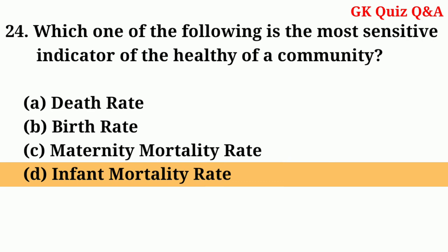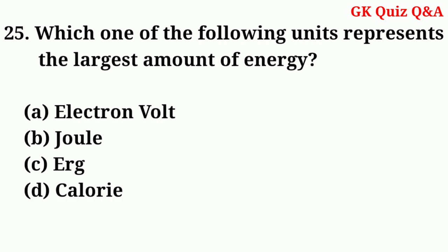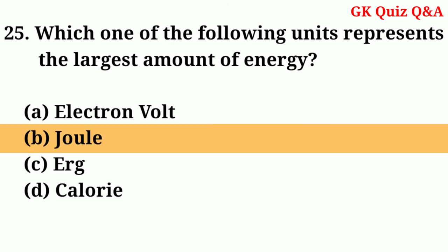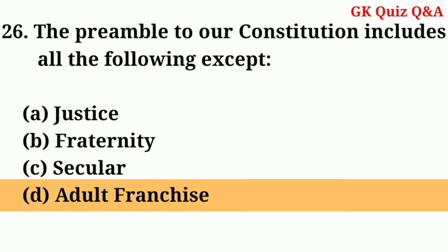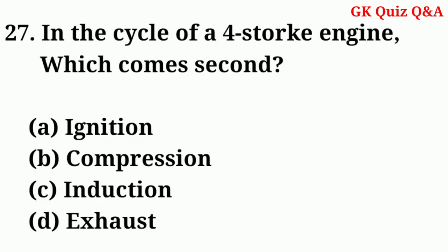Which one of the following units represents the largest amount of energy? Answer: B — Joule. The preamble of our Constitution includes all the following except — Answer: D — Adult franchise.